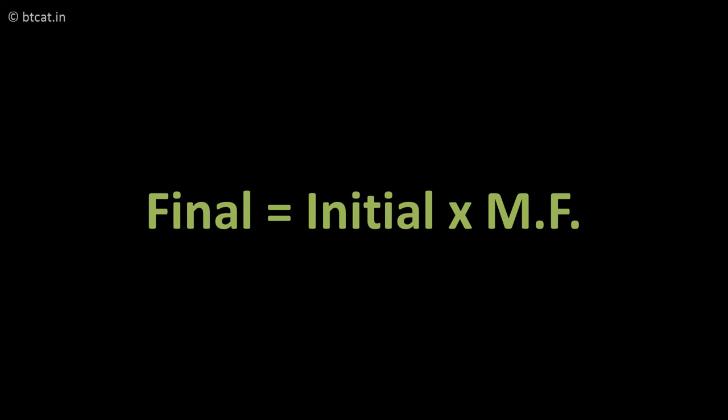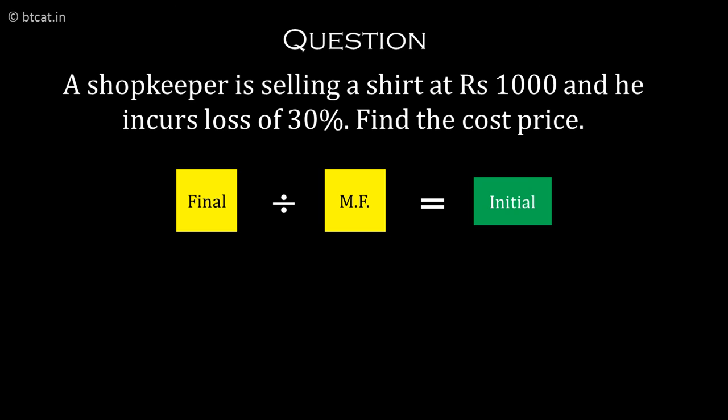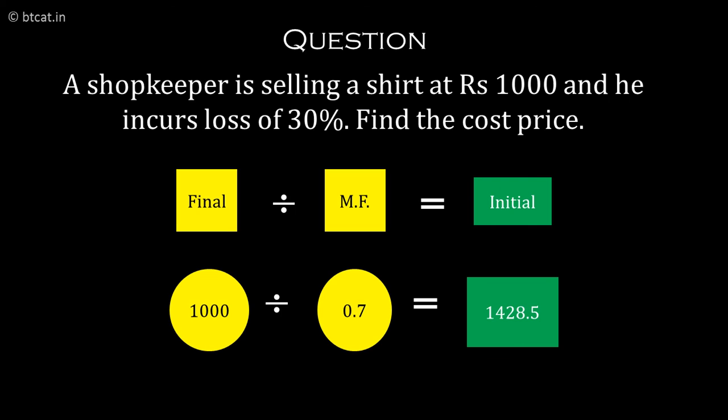For example, if a shopkeeper is selling a shirt at 1000 rupees and he incurs a loss of 30% in the process, the question asks us to find the cost price. Using our equation, Initial = Final ÷ MF. Here F is 1000 and MF is 0.7 because it is a case of a loss. So the answer is 1000 divided by 0.7, which gives us the effective cost price of the shirt.